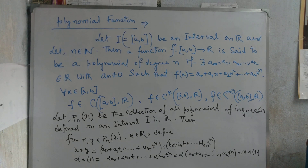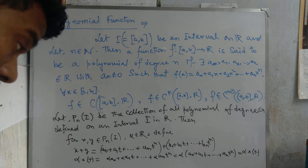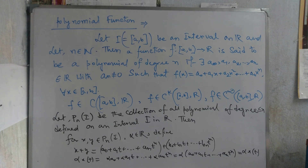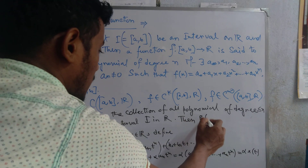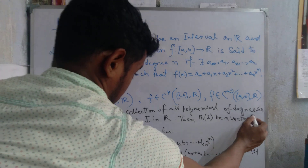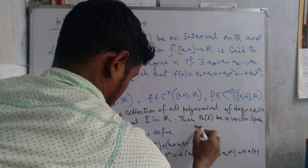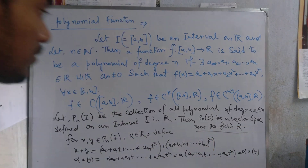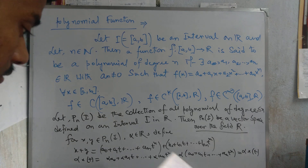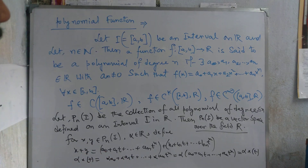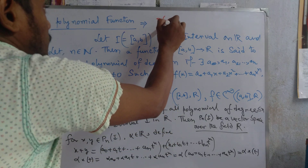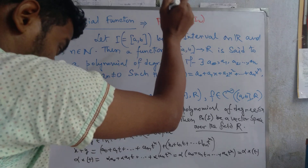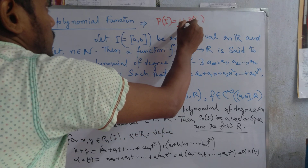Therefore P_n(I) is a vector space over the field. We also note that P(I) equals the union of P_n(I) for n = 1 to infinity, and this is also a vector space.